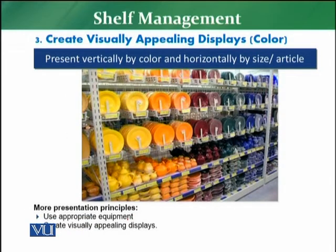When creating visually appealing displays, you need to present vertically by color and horizontally by size or by article. Vertically, from top to bottom, it has to be the same color. Horizontally, you present by size or by article. Also, you need to use proper equipment — for example, these plates cannot be displayed on racks, gondolas, or pallets. There are proper racks for each product category.